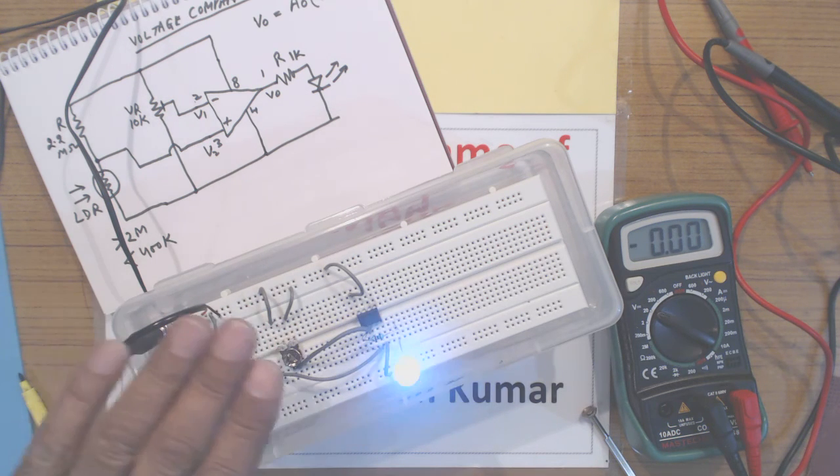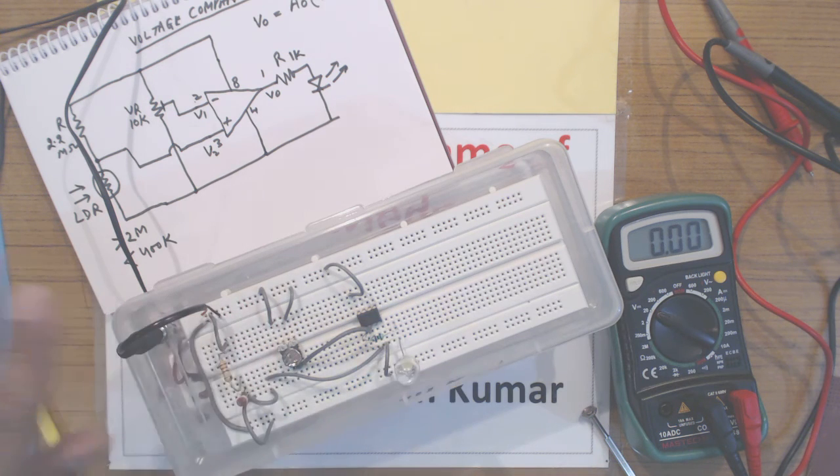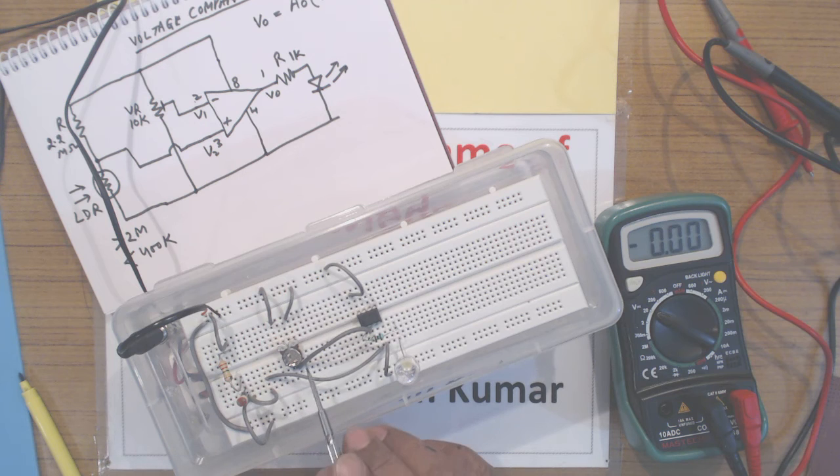It is a dark operated LED light and you can adjust the sensitivity of the LDR with this potentiometer.